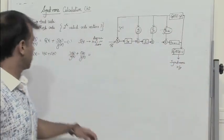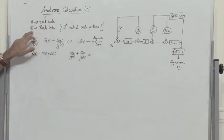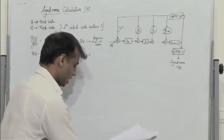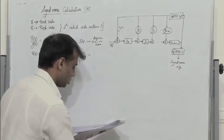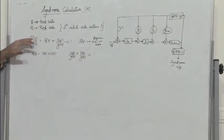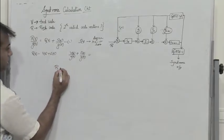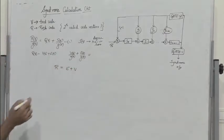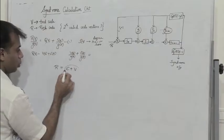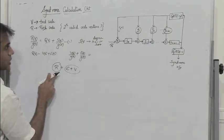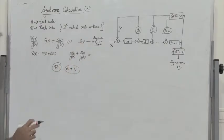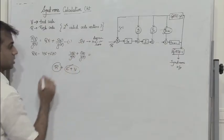Let us assume that V is the transmitted code and R is the received code. The transmitted code and the received code would be the same if there are no errors. Else, if there is an error, then the received code would be the error plus the transmitted code. So when we get the received code, it should be one among the two-power-k valid code vectors. If not, it indicates that there is an error.